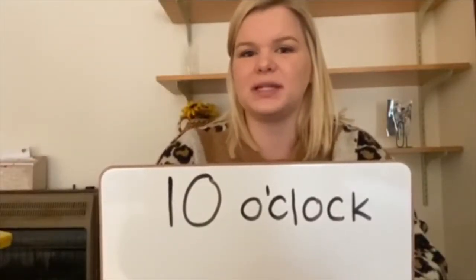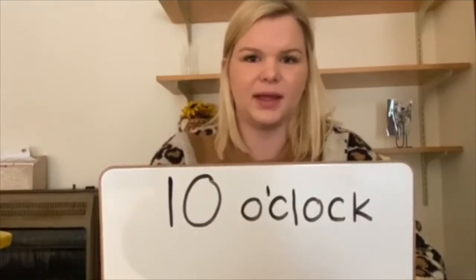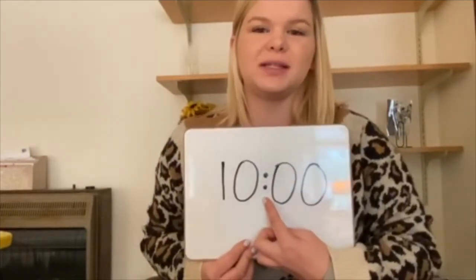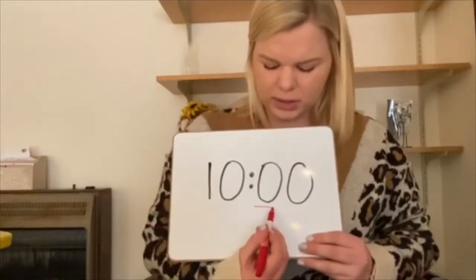Now if I wanted to write the time 10 o'clock, there is more than one way that I can write it. I can also write it as a digital time. These two dots in the middle of my numbers are called a colon. The colon separates the two numbers — what the hour hand tells us and what the minute hand tells us. The number before the colon tells us the hour, so before the colon I write the number 10. The number after the colon tells us the minutes that have passed. When it's 10 o'clock that means there have been zero minutes past 10 o'clock, so I write my number zero two times. Whenever I see two zeros following my colon, that means it is exactly 10 o'clock.